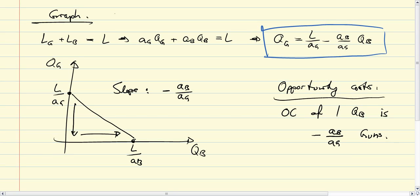Let's make it perfectly clear with a numerical example. We have L equal to 10 hours and AG equal to 2 hours—so it takes 2 hours to produce one gun. And it takes 1 hour to produce a barrel of butter.